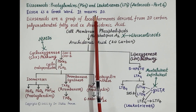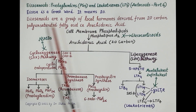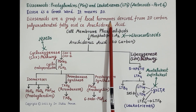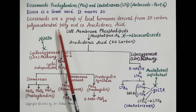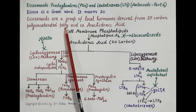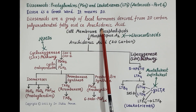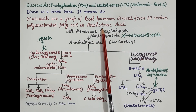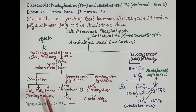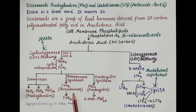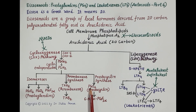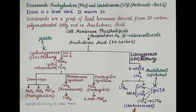Icosa is a Greek word meaning 20. Eicosanoids are a group of local hormones derived from 20-carbon polyunsaturated fatty acid — specifically arachidonic acid. Eicosanoids include prostaglandins (PG), thromboxane (TXA2), prostacyclin (PGI2), and leukotrienes (LT).